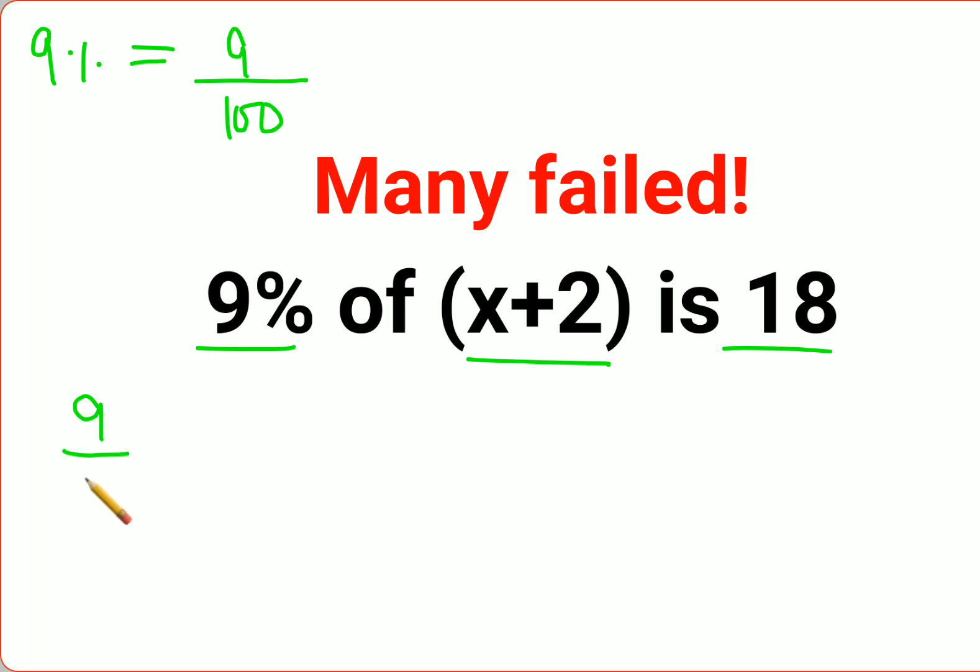So 9% can be written as 9 upon 100. Of, in mathematics, is always just multiplication. So let's multiply this, x plus 2 is means equal to 18.